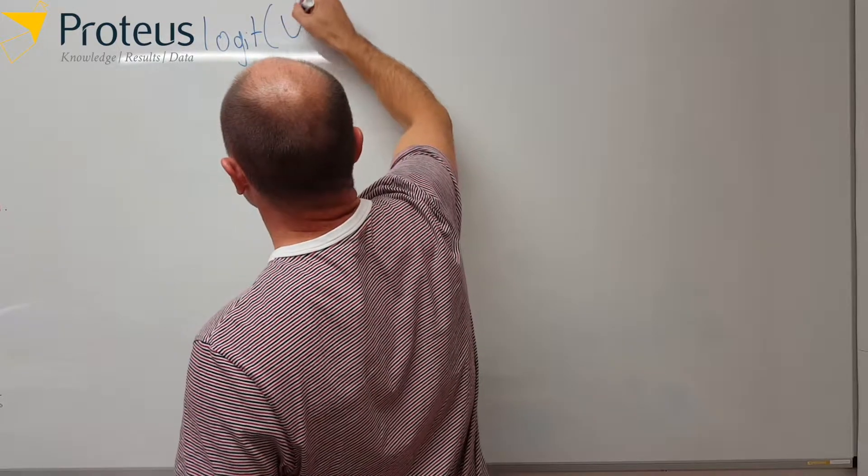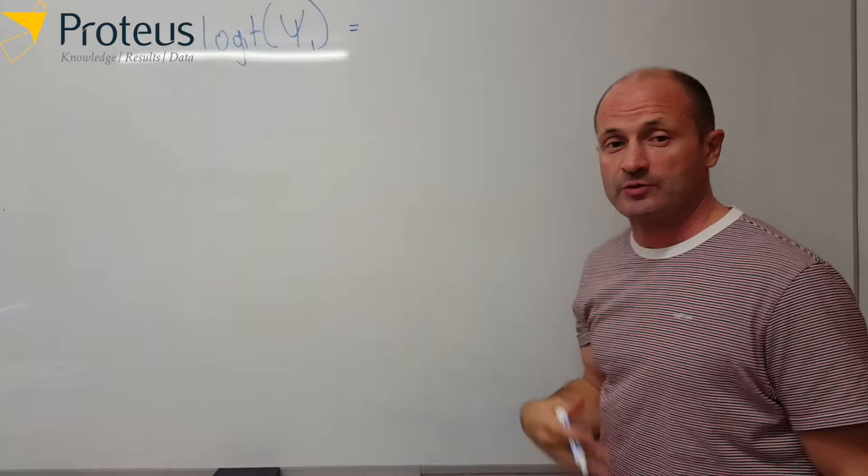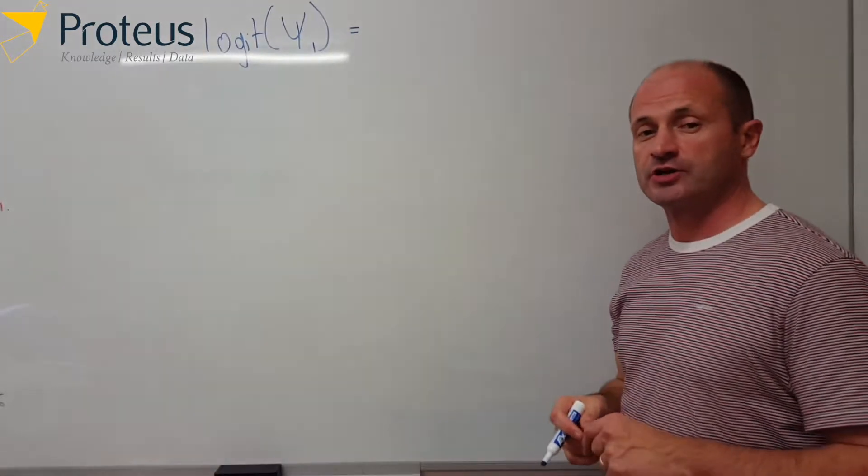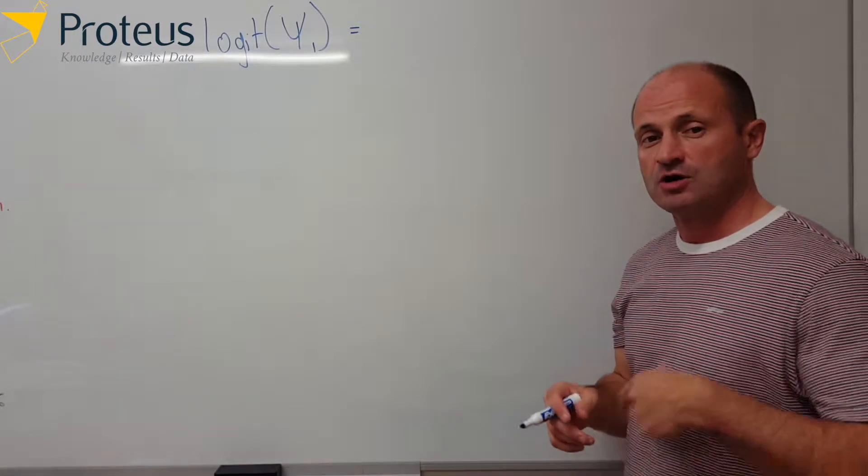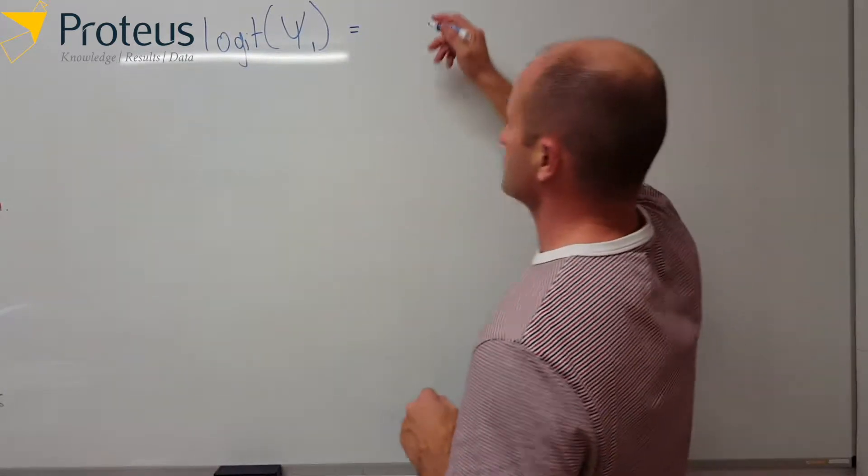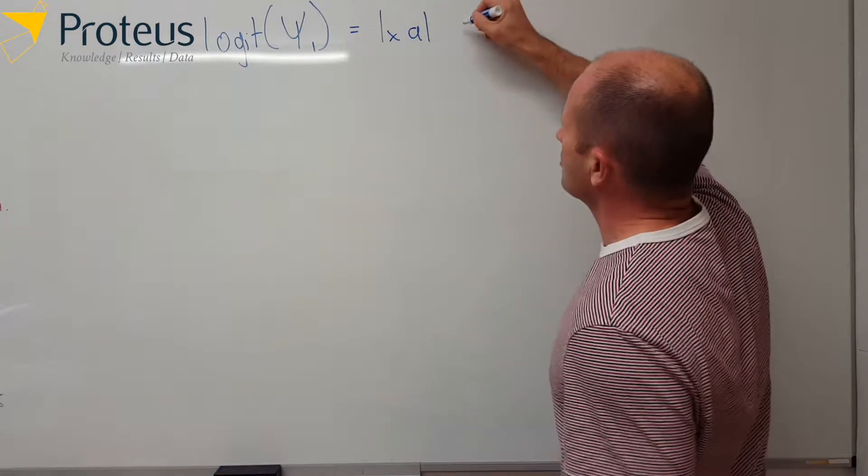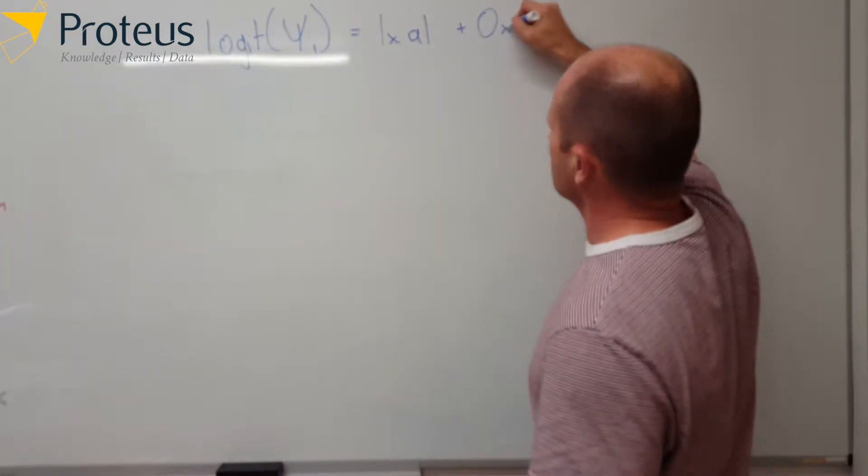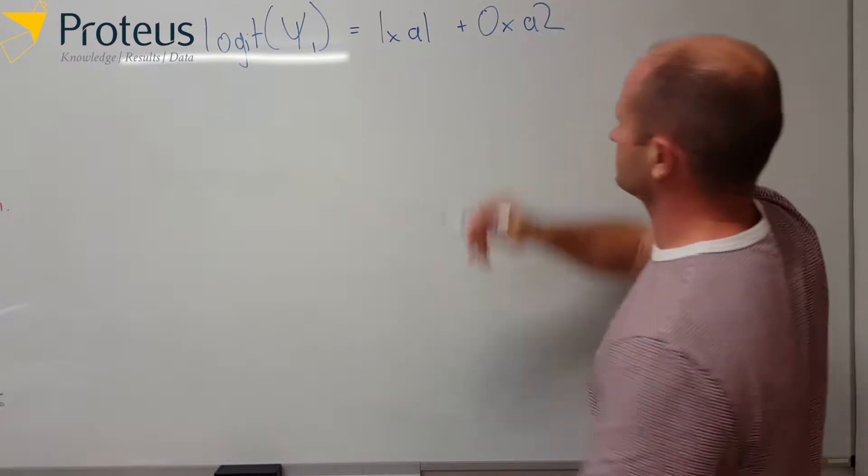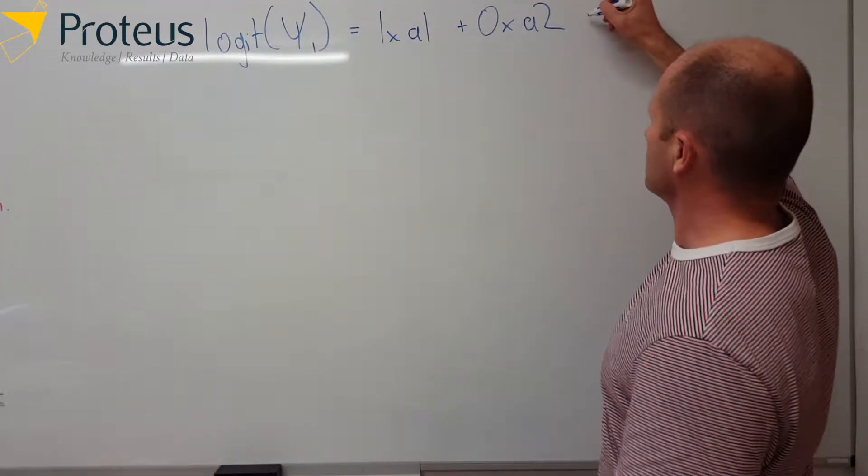logit of occupancy in year one. And the way we use it is we go along each row and we multiply the values in the cell by the regression coefficient or the label for each column. So in this case it's 1 times a1 plus 0 times a2. Okay, so that just becomes the value a1.